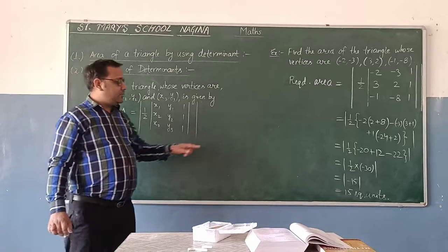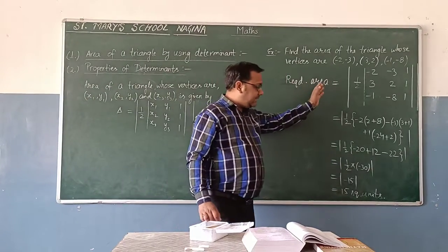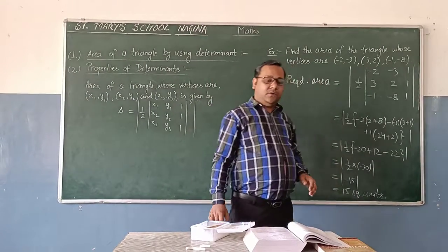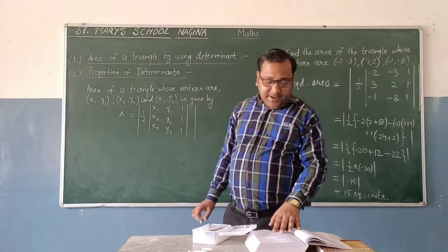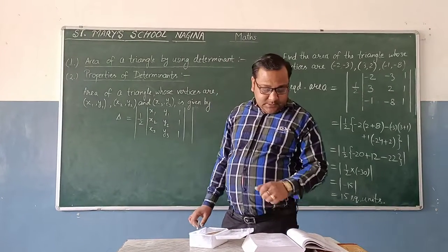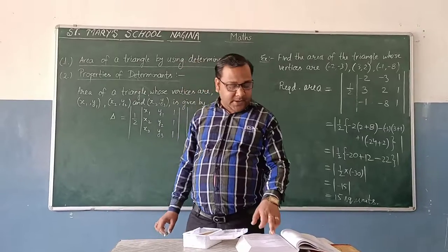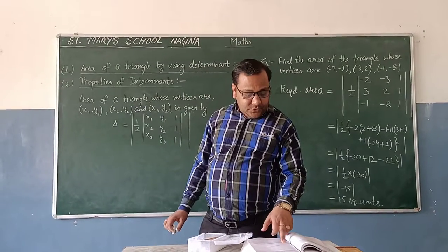So, by using this formula we can find easily the area of triangle if all the vertices are known, coordinates of all the vertices are known.